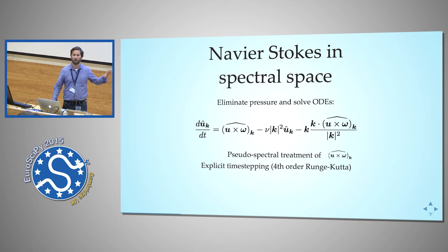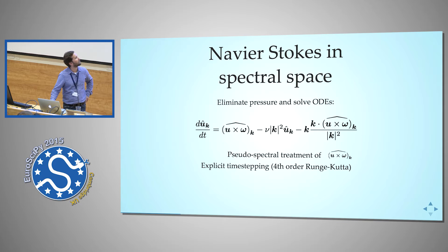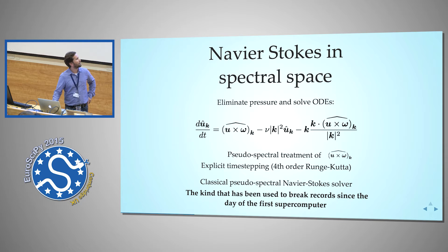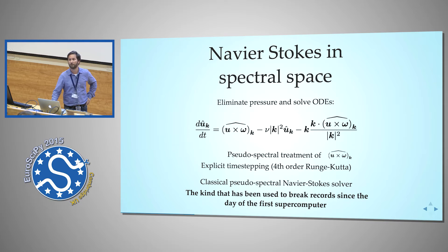The Navier-Stokes equations can be lifted into Fourier space, and all of a sudden you have a set of ordinary differential equations that can be stepped forward in time using, for example, fourth-order Runge-Kutta. The nonlinear term can be treated with the pseudospectral method, and you have a classical pseudo-spectral Navier-Stokes solver. Solving these equations like this has been done since the 1970s — the first DNS was performed in 1972 on 30,000 unknowns. Today they are solving these equations on hundreds of billions of nodes.